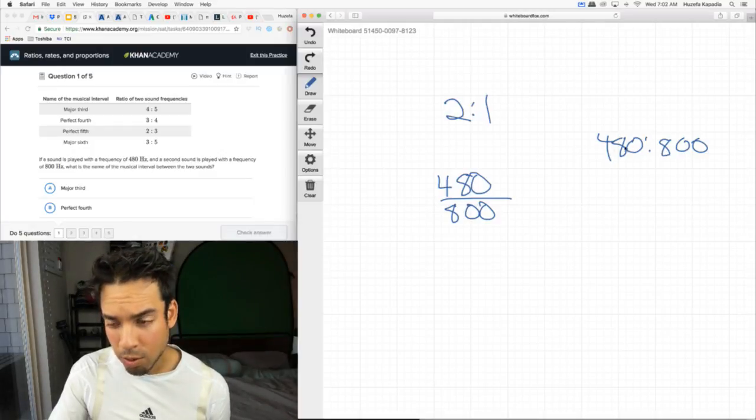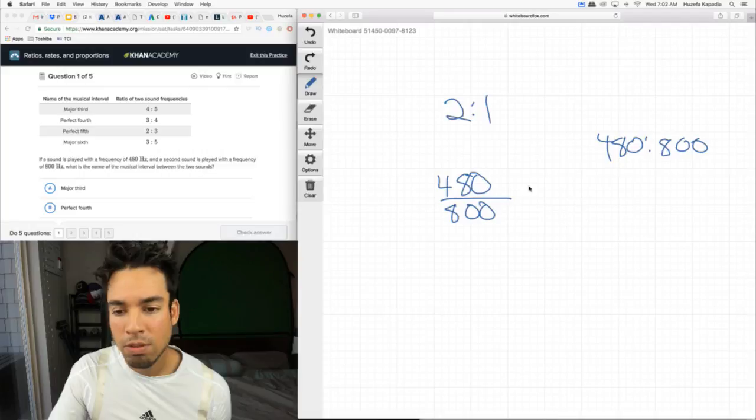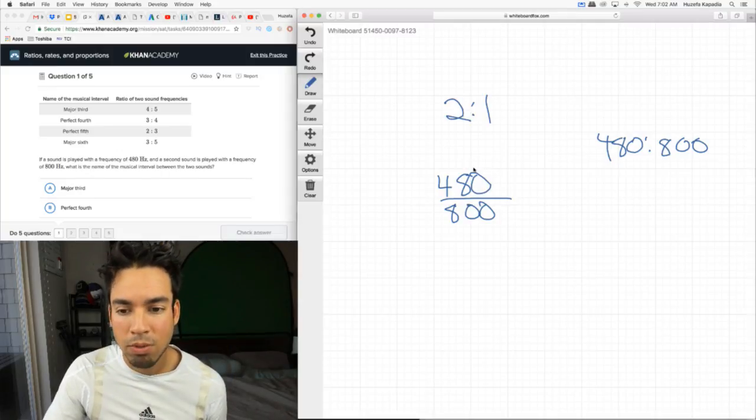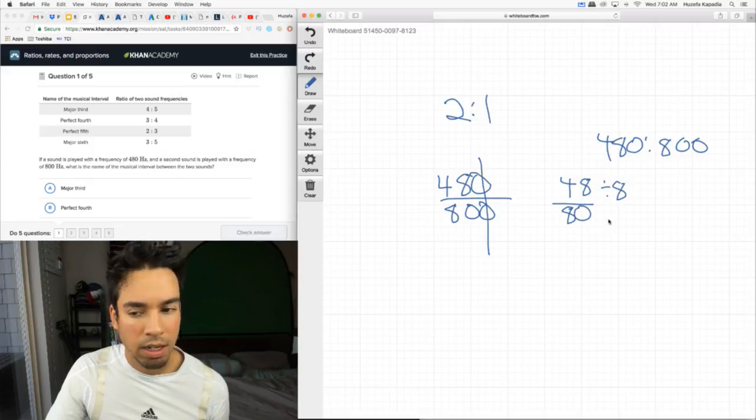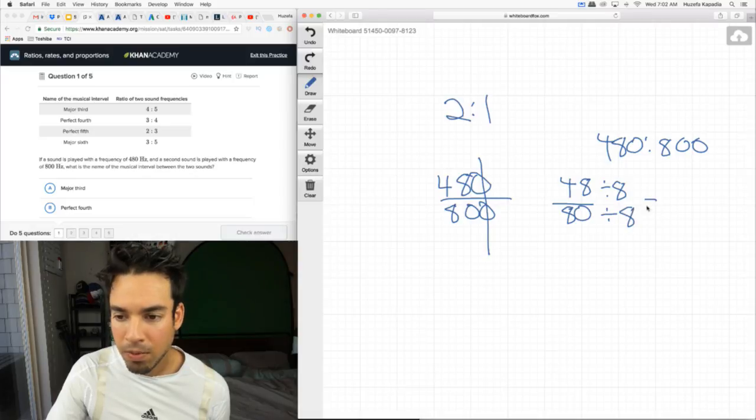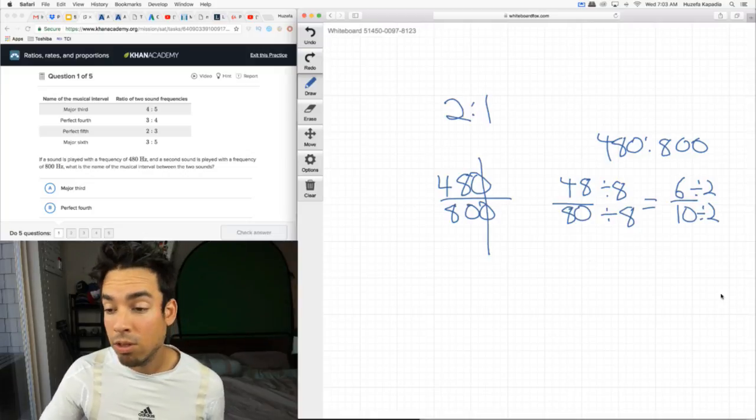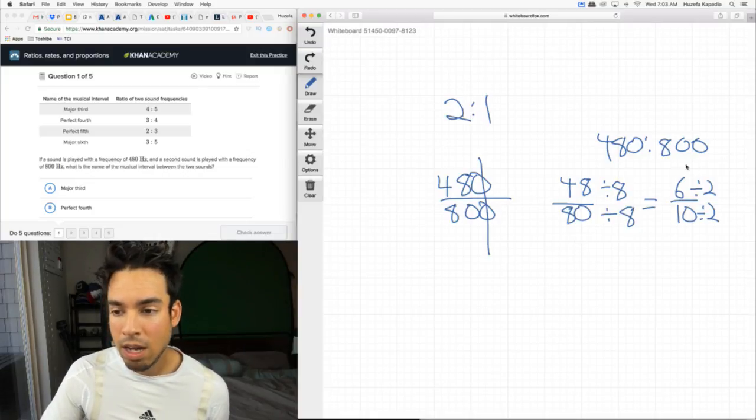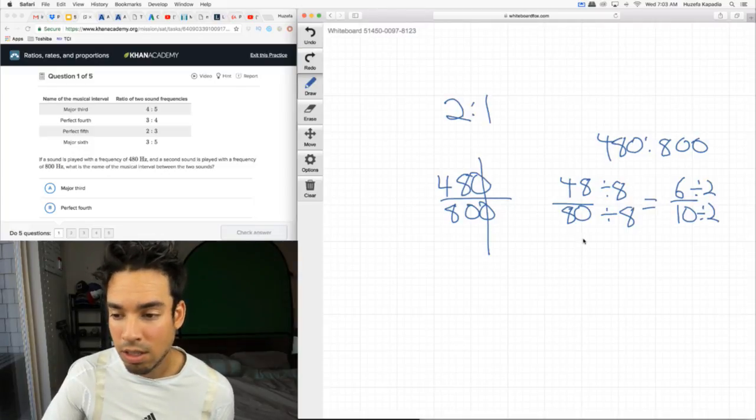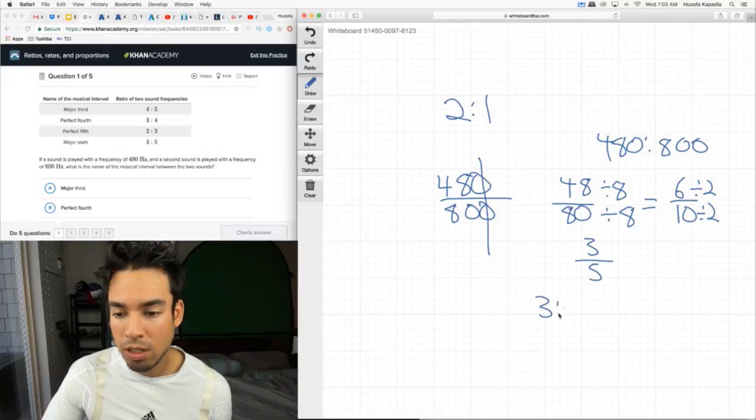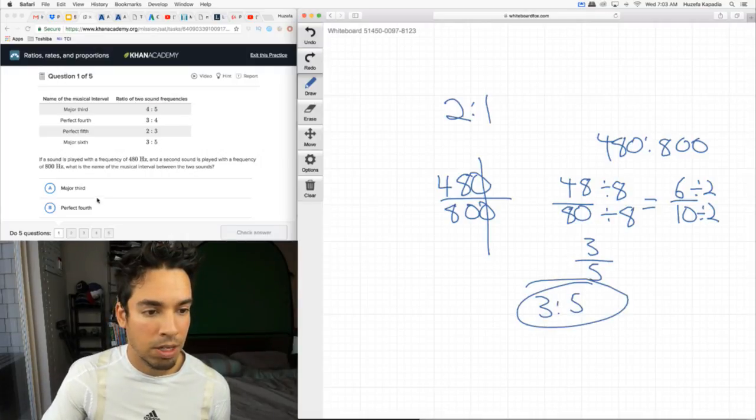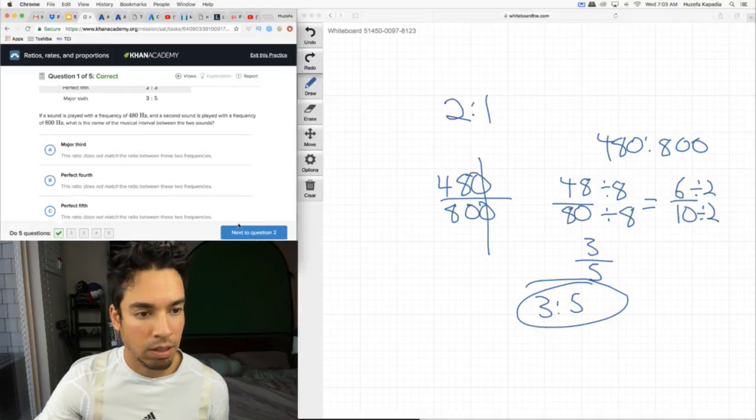We have to simplify these ratios and see what they boil down to. It's obviously not 2 to 1, that would be 800 to 400. Let's simplify it like a fraction. If it were 480 over 800, first divide both by 10 to get 48 over 80. Then divide both by 8: 48 divided by 8 is 6, and 80 divided by 8 is 10. Divide again by 2 to get 3 over 5, or a 3 to 5 ratio. That would be major sixth. Let's see if that's correct. It's correct, cool.